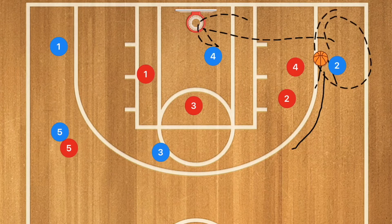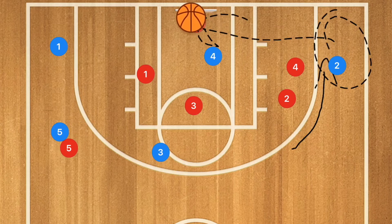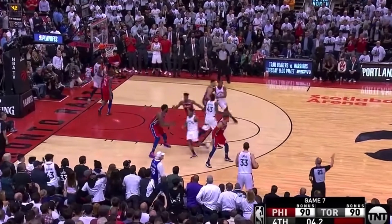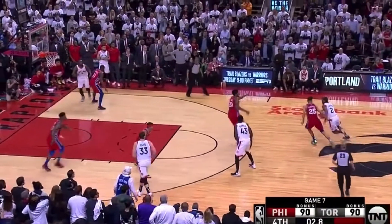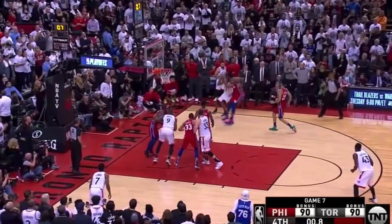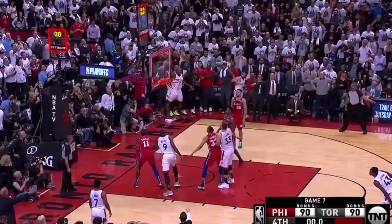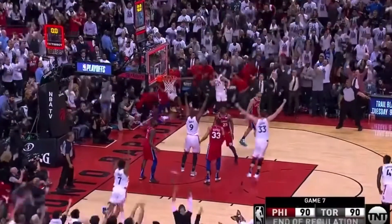Kawhi Leonard continued to drive towards the baseline along the sideline and jacked up a shot from the corner. He got a lot of arc on it and lots of spin, which allowed him to have a very soft shot so that it bounced around the rim and finally went in. This could be a great play for your team to run.